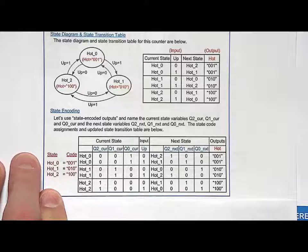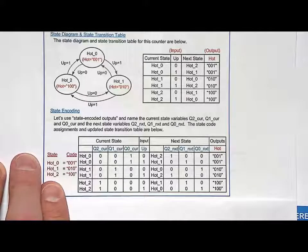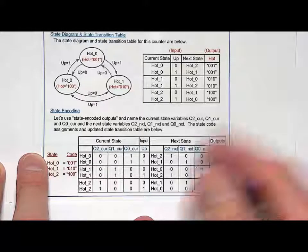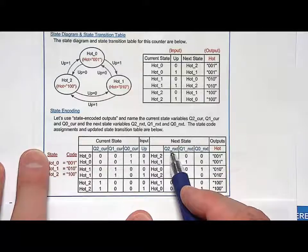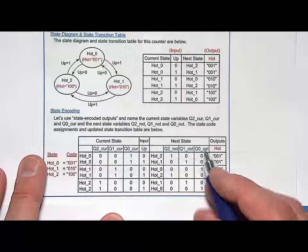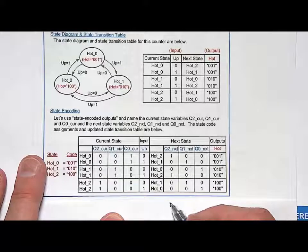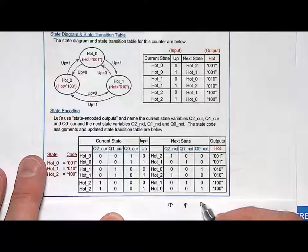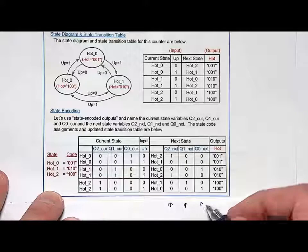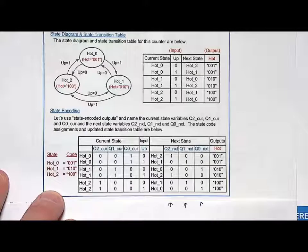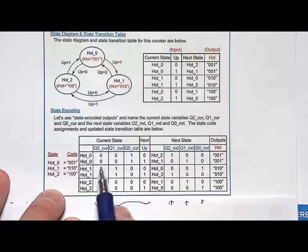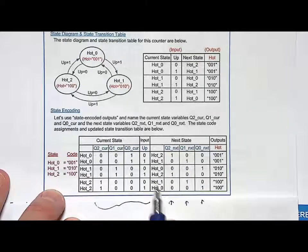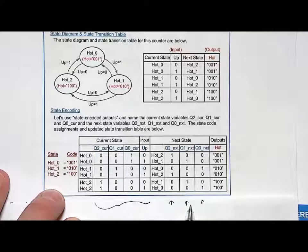Now I need to think about the next step, which is synthesizing the next state logic. And what is the next state logic? It is combinational logic circuits to produce Q2next, Q1next, and Q0next. So I need three combinational logic circuits. I'll go ahead and do three K-maps. However, what are the inputs into the K-maps? Well, in this situation, there's actually four inputs: the three current state codes, but there's also an input called UP.